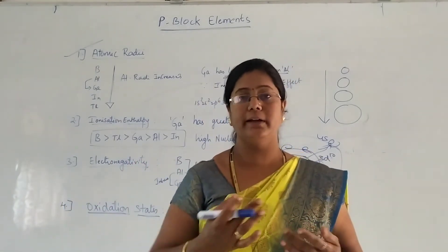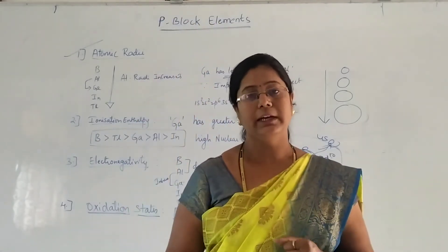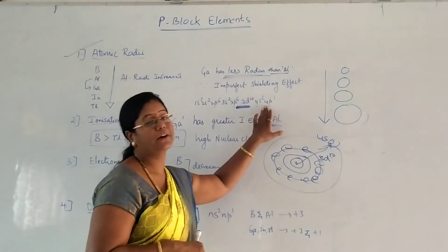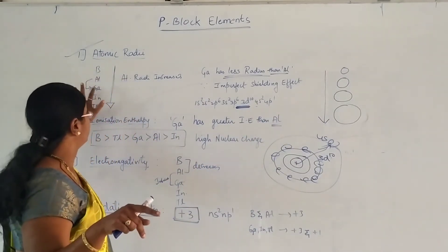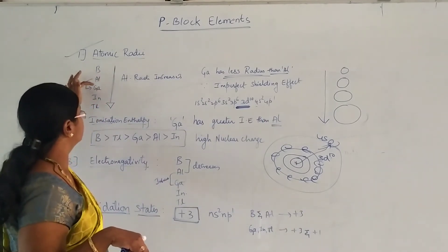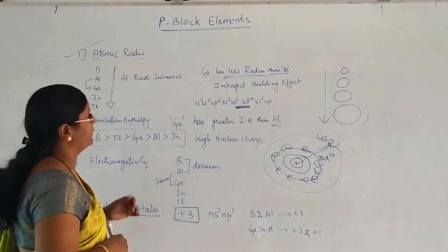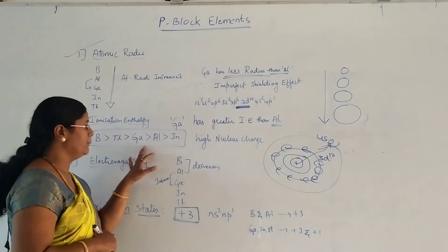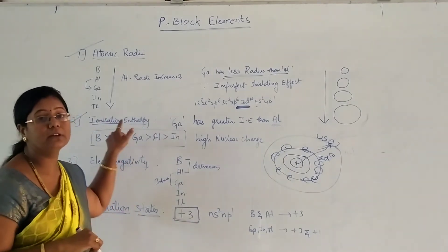The regular trend is that as we move down the group from top to bottom, atomic size increases. But Gallium shows a deviation: the size increases from Boron to Aluminium, then decreases at Gallium, then increases again. This concludes our discussion of atomic radii. Now, coming to the second point: ionization enthalpy.